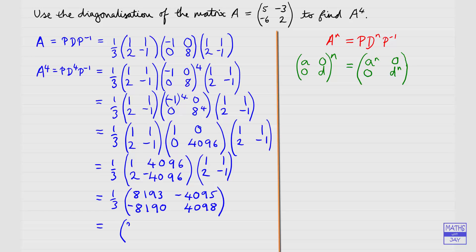After dividing by three, we get 2731 and −1366 in the top row.